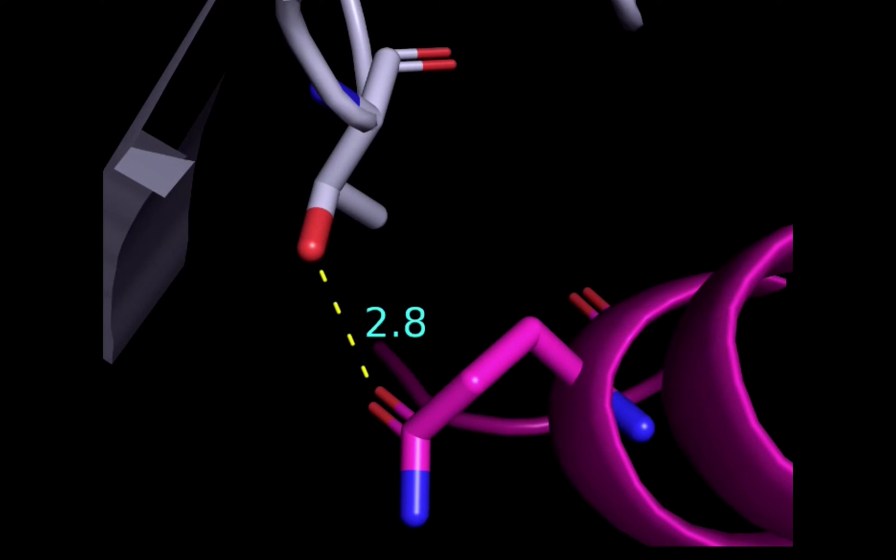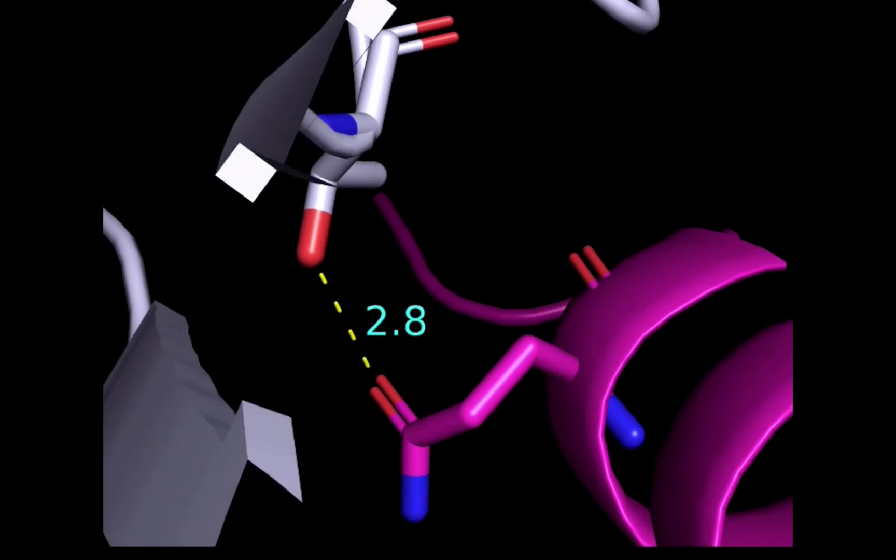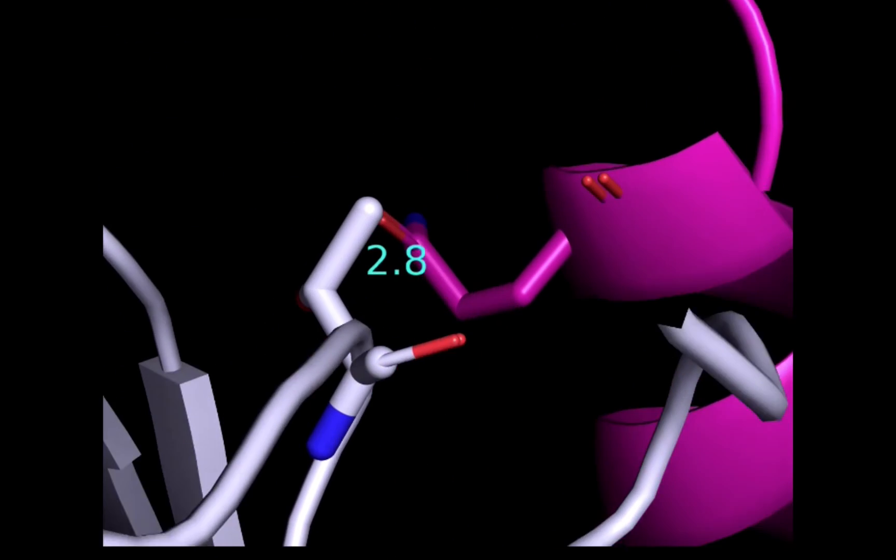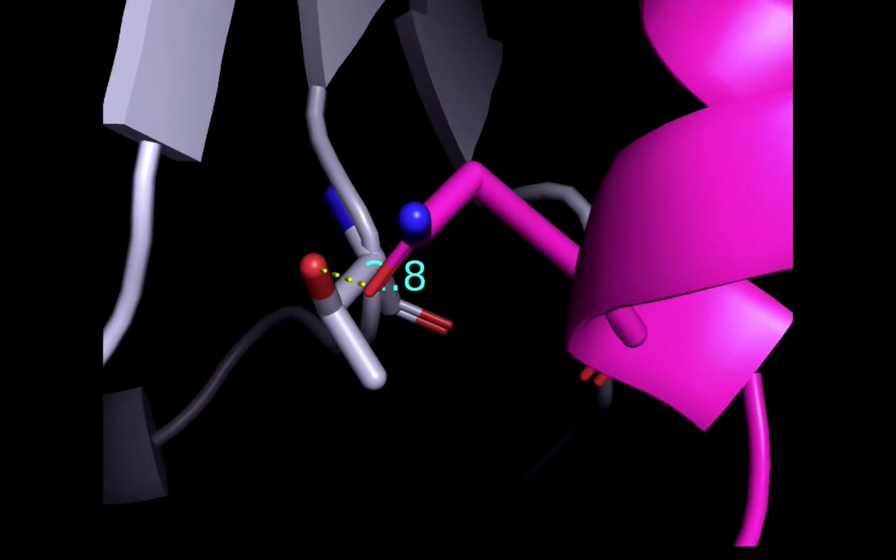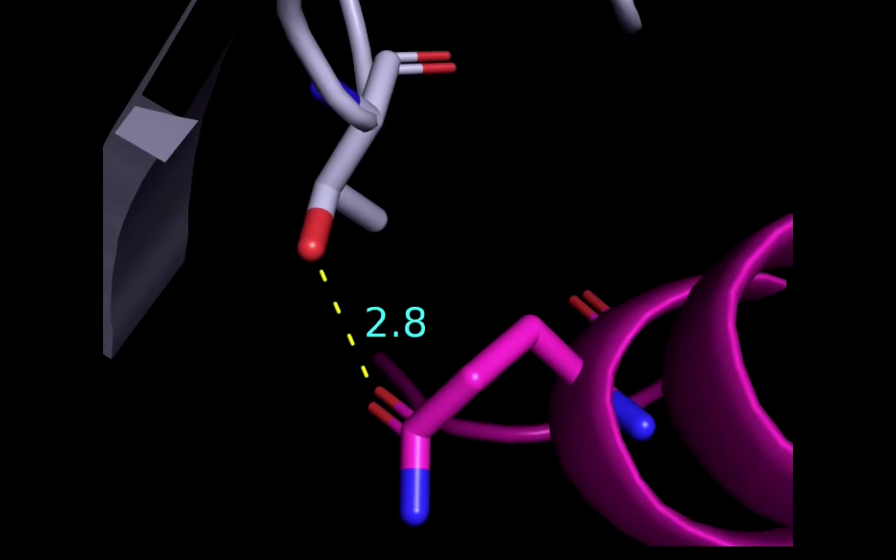Moving over, here we have a hydrogen bond. The implied hydrogen atom on this OH group of the threonine side chain is hydrogen bonding to the carbonyl oxygen of this glutamine residue. Hydrogen bonding is stronger than hydrophobic interactions. Notice the distance between the nuclei is shorter, this one being 2.8 angstroms.